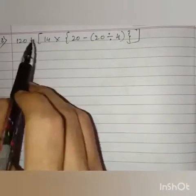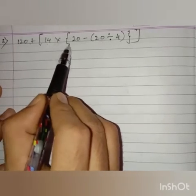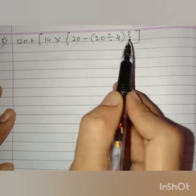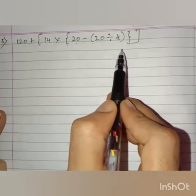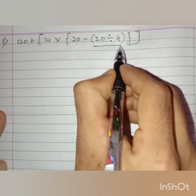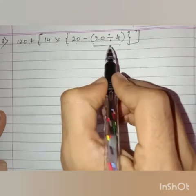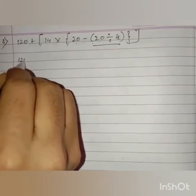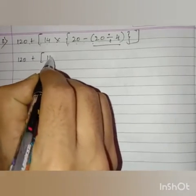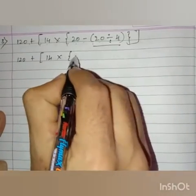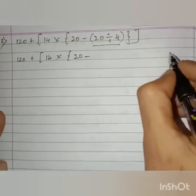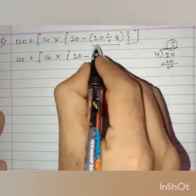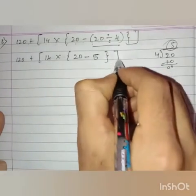Next, question number 3: 120 plus big bracket open, 14 into curly bracket open, 20 minus small bracket open, 20 divided by 4, common bracket close, curly bracket close, big bracket close. First we have to remove the common bracket. The operation inside is division, so 20 divided by 4 — 4 times 5 is 20 — we get 5. Write 5 here. Curly bracket close, big bracket close.